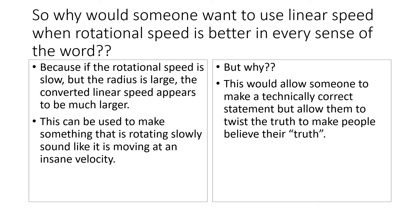So why would someone want to use linear speed when rotational speed is better in every sense of the word? Because if the rotational speed is slow, but the radius is large, the converted linear speed appears to be much larger. This can be used to make something that is rotating slowly sound like it is moving at an insane velocity.